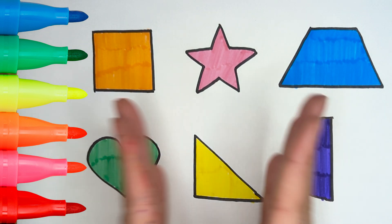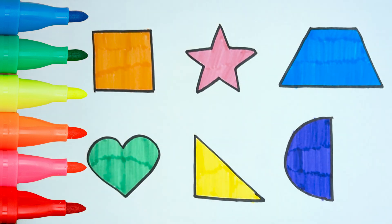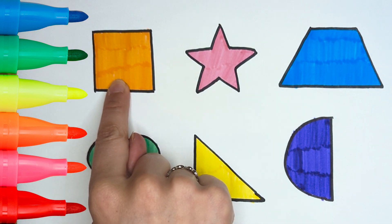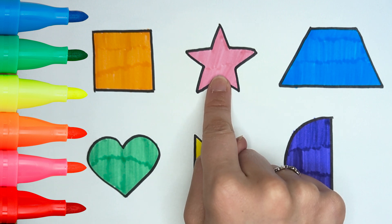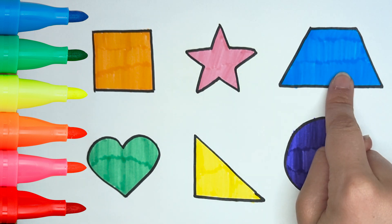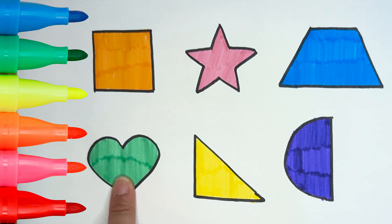Well done kids! Now let's repeat. The square is orange. The star is pink. The trapezoid is blue. The heart is green. The triangle is yellow. The half circle is purple.